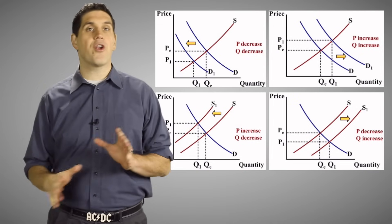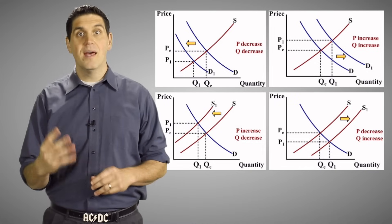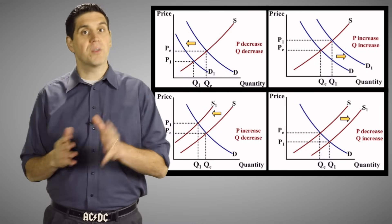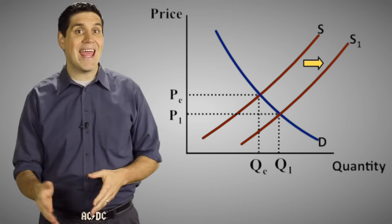It might seem confusing to see all these curves move around, but keep in mind there's only four things that can happen to supply and demand. Demand can go down, demand can go up, or supply can go down, or supply can go up. When a curve shifts, the graph will tell you what happens to the price and to the quantity.